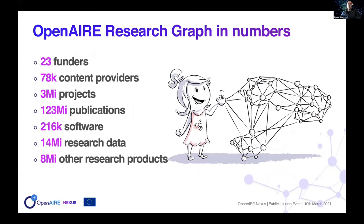A few numbers about the OpenAIRE Research Graph: it currently includes 23 funders, more than 78,000 content providers, more than 3 million projects from Europe and beyond, 123 million publications, different cases of software, 40 million research data objects, and 8 million other research products. But these numbers are just the tip of the iceberg, as the amount of data actually contributing to the graph is much higher — this is just the result of the aggregation and disambiguation tasks.